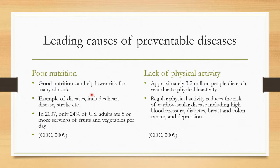The first leading cause is poor nutrition. Good nutrition lowers the risk for many chronic diseases, including heart disease and stroke. In 2007, only 24 percent of adults ate five or more servings of fruits or vegetables. Poor nutrition is about not eating a good diet that would help improve our health status.